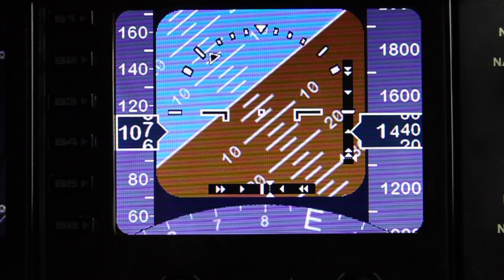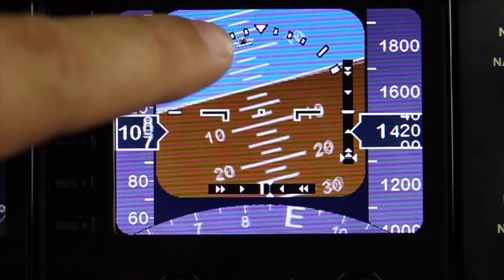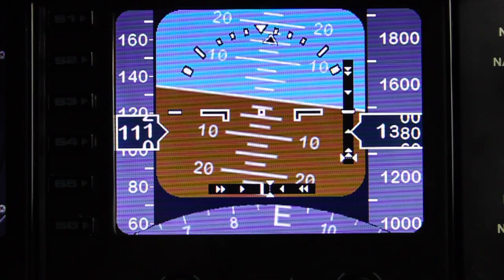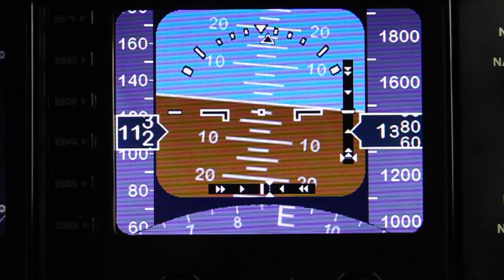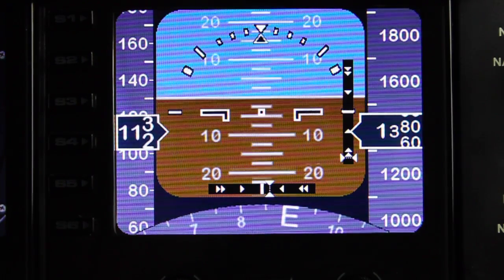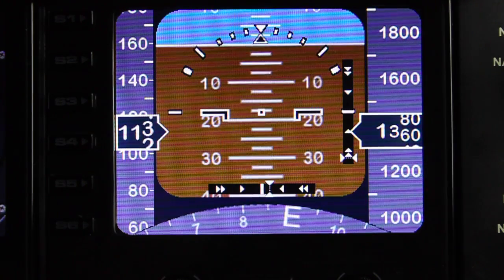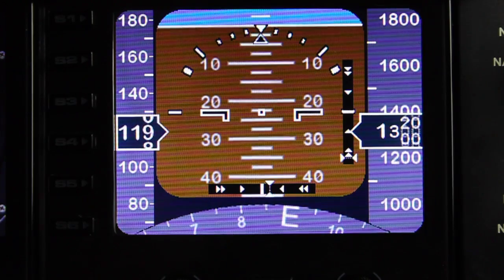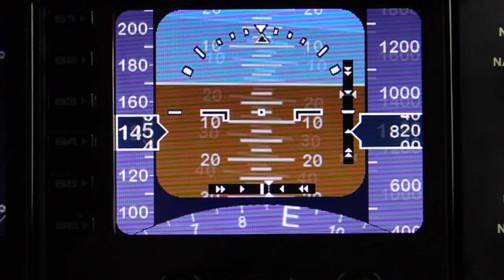We also have a turn indicator. This little black arrow is the indicator of the central position and whether we're turning or not. I'm still a bit high, so I'm going to drop the nose right down to bring this glide slope indicator back to where it should be for an approach. There we go.